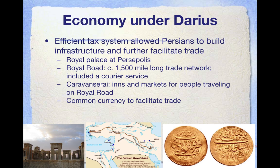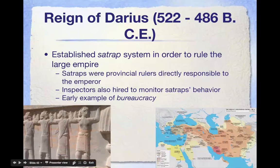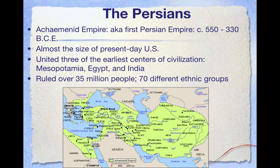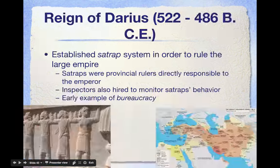Darius is also well known for improving the economy of Persia and establishing infrastructure that helped facilitate trade and make the Persian Empire as wealthy as it was. The capital of the Persian Empire was established at Persepolis, which is relatively central — a really good location in terms of balancing out the western and eastern influence of the Persian Empire.